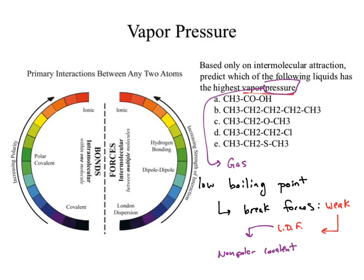How do you know you have a nonpolar covalent bond? C to H, or same to same. So I can now look at each of those compounds. I don't even have to look at forces because I've boiled it down to what bonds are shown. I need to see carbon to hydrogen and same to same. If I see anything other than those, it's not nonpolar covalent, which means stronger forces. I want the weakest force possible.